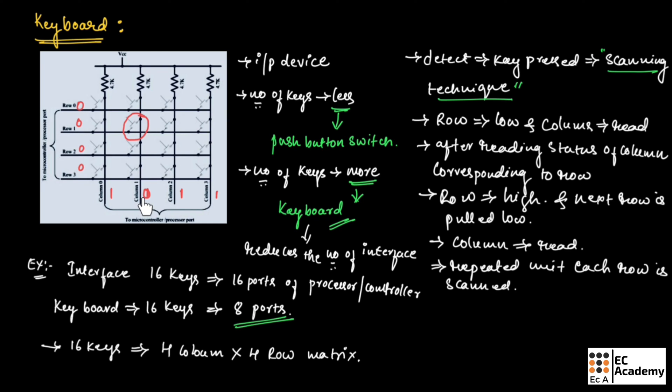Since column 1 is 0, the controller will understand that the key which is in column 1 is pressed, but now we need to identify which key has been pressed.